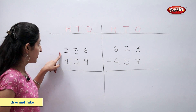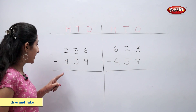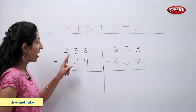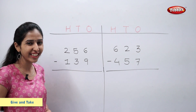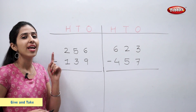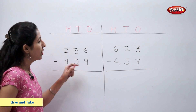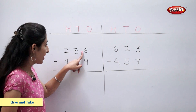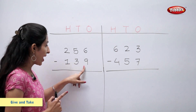Two hundred and fifty-six minus one hundred and thirty-nine is equal to how much? Let's find out. Let's subtract ones first. Six minus nine.